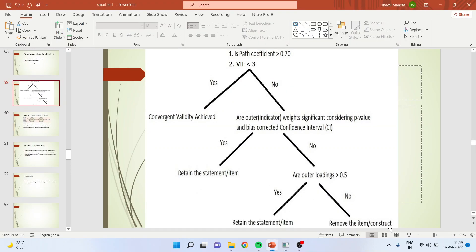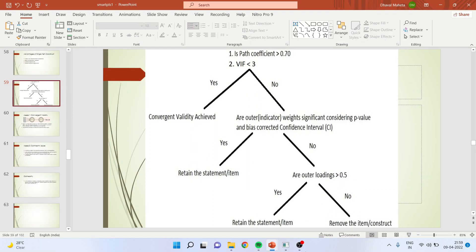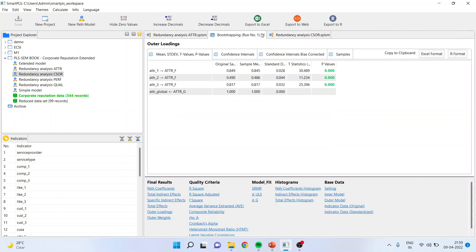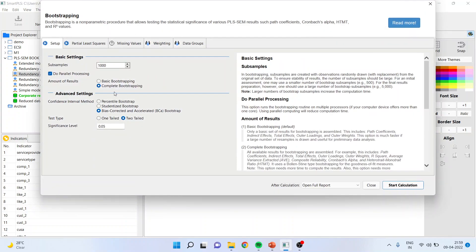Looking at the diagram again: is the path coefficient more than 0.7? Yes. Is VIF less than 3? Yes — convergent validity is achieved. If it is no, we check outer weights. If still not resolved, we go one level up to outer loading. If outer loading is not contributing, you will have to delete the item which is not contributing. Now let us carry out the analysis — we will again run bootstrapping and start the calculation.